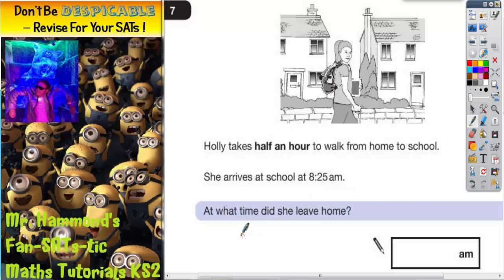Question 7 is all about time and lengths of journeys. It says Holly takes half an hour to walk from home to school. She arrives at school at 8:25am. What time did she leave home?